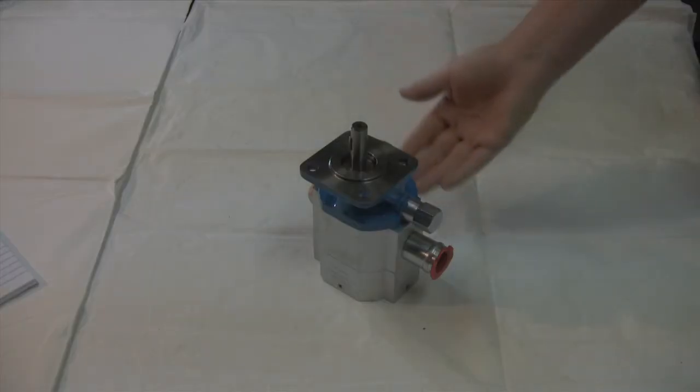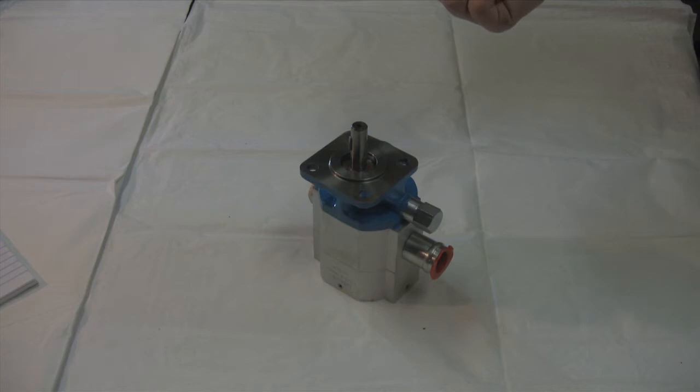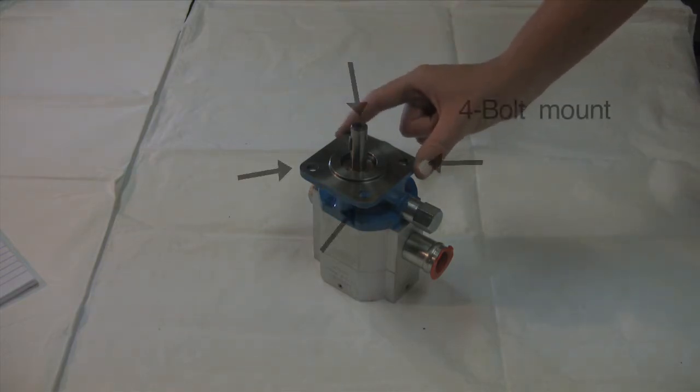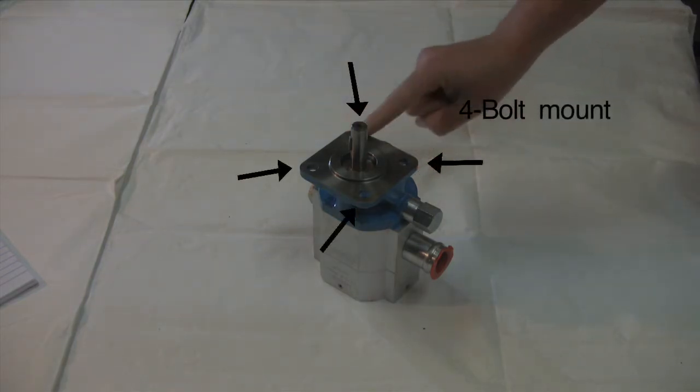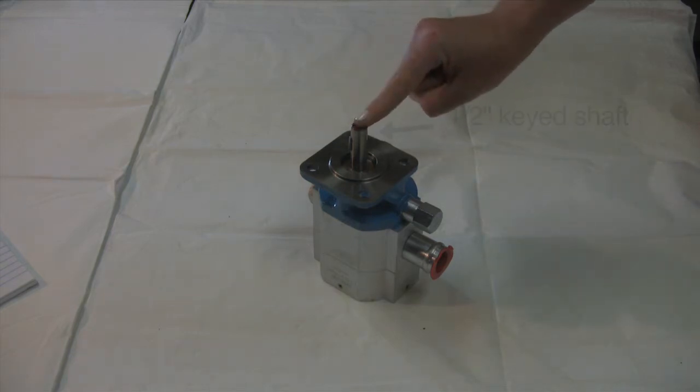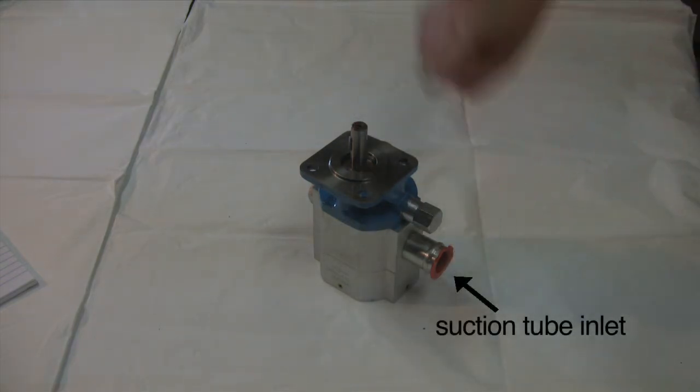The 11, 13, and 16 GPM 2-stage Log Splitter Pumps all have a 4-bolt mount that fits any 4-bolt pattern, a 1-inch keyed shaft, a suction tube inlet, and an MPT outlet.